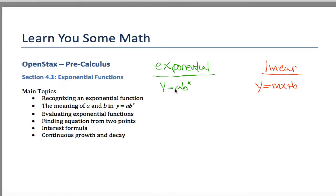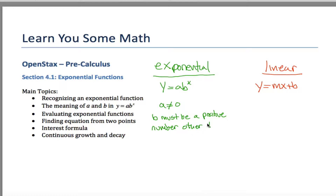That's not entirely true — there are some constraints on these constants a and b. It turns out we will not let a equal zero. With linear functions, m and b can be whatever you want. With exponential functions, we put restrictions in: a cannot be equal to zero, though it could be negative. B has more restrictions: b cannot be zero, it cannot be one, and it cannot be negative. One way to describe all that is: b must be a positive number other than one. Make sure you understand what that means — b can't be negative three, can't be zero, can't be positive one, can't be any negative number.